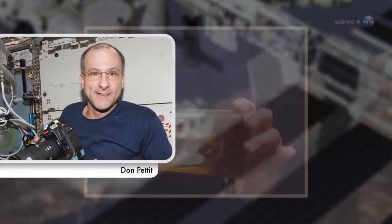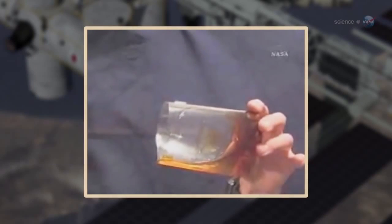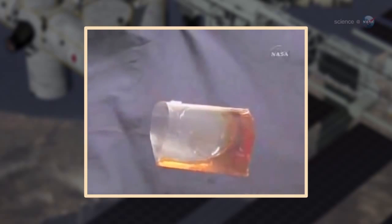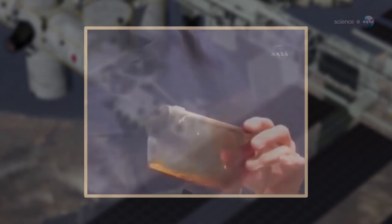Astronaut Don Pettit, who worked with the capillary flow experiment during his time on board the space station, helped invent the cup. And he shares the patent with Weislogel and two mathematicians, Paul Conkiss and Robert Finn, who performed the first theoretical analysis of the phenomenon.